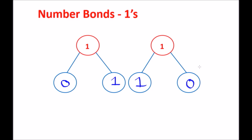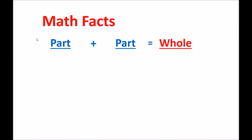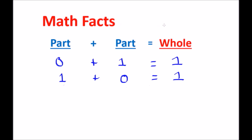What does this mean in terms of math facts? There are two ways to make the number 1. The first way is 0 plus 1 equals 1 — that's our whole. The second math fact is 1 plus 0 equals 1. So there are two ways to get to the number 1: 0 plus 1, or 1 plus 0, because there are two number bonds that make up the number 1.